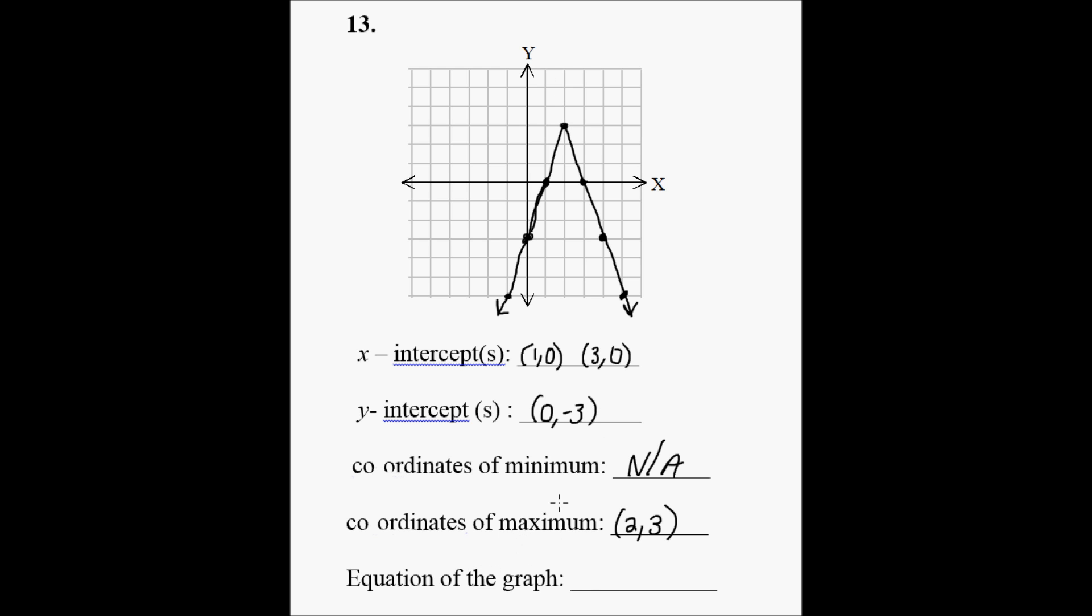Now we're asked to give the equation of the graph. It's an absolute value function, and it's going to be y equals. We need to look at the slope up to the right of the vertex, and I'm going to do that in a different color here.